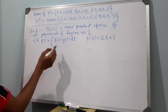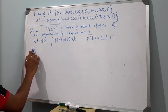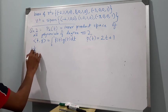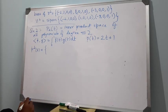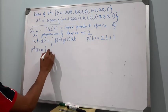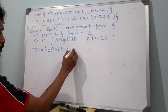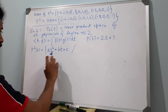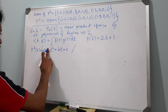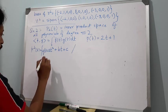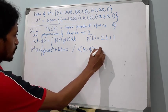Let us find the orthogonal complement of p(t). Since we are talking about the inner product space of polynomials of degree less than or equal to 2, let us consider q(t) to be of the form at² + bt + c, which is a quadratic polynomial, such that the inner product of p and q equals 0.